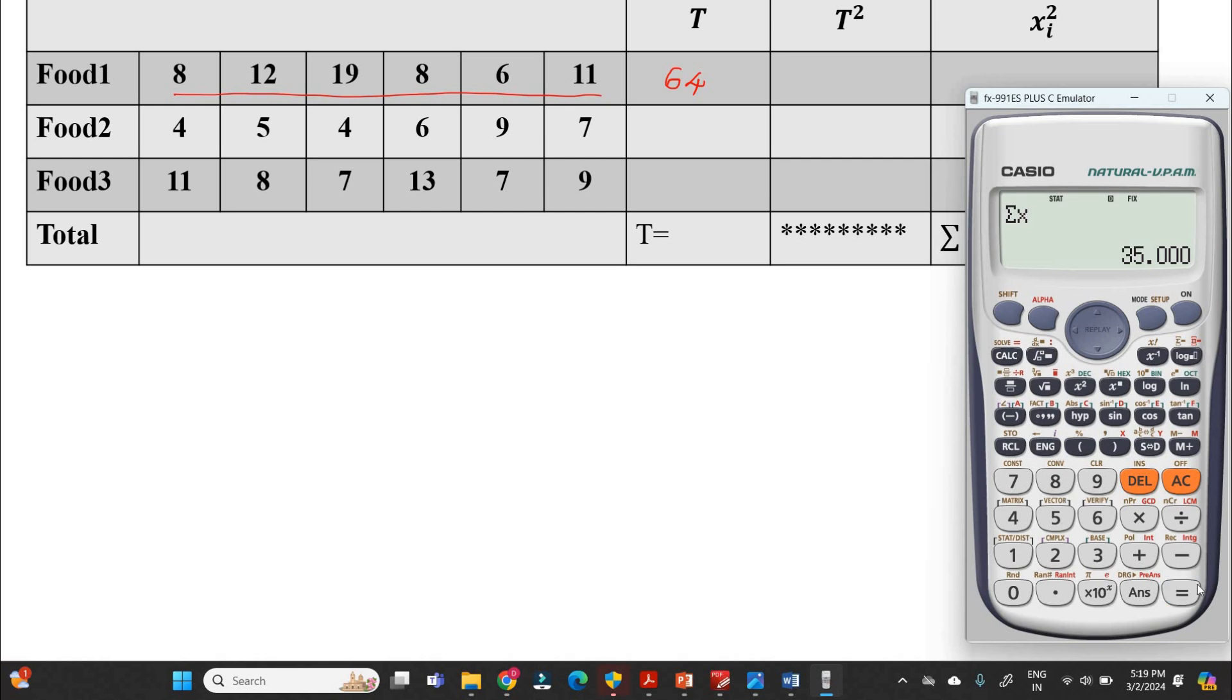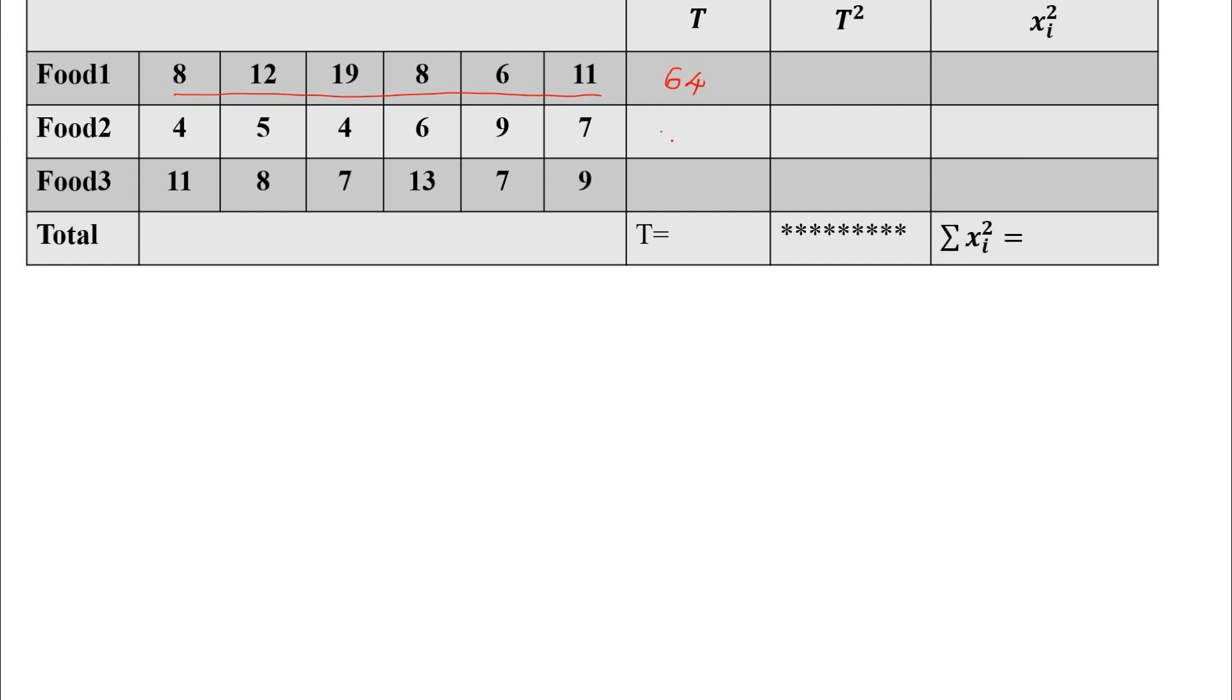In that, option 2 equals, you got 35. Note that, and along that we can also find out the squares of 35. 35 square, that becomes the second column, that is T square. 35 square is 1225. We will note that: 35 here and T square value is 1225. Similarly, the square of 64 is given by 4096.